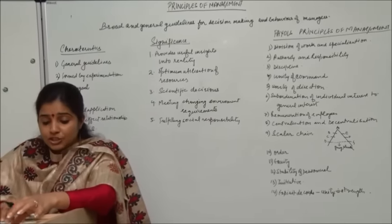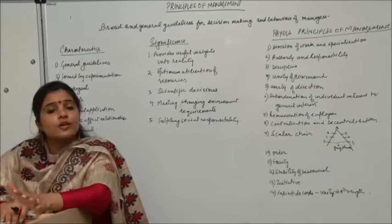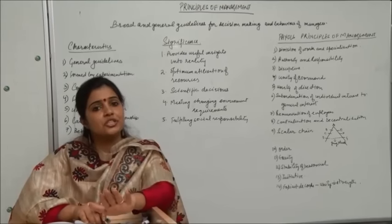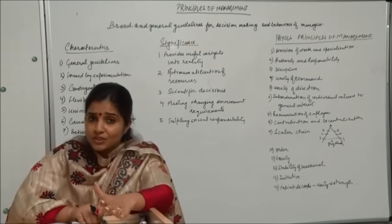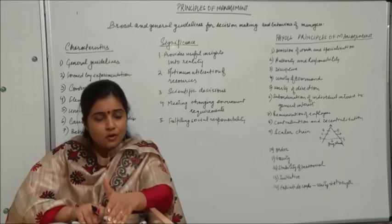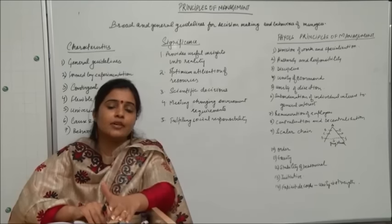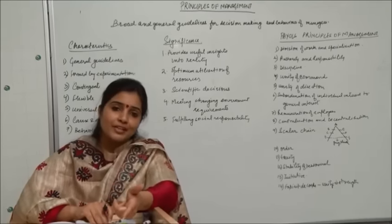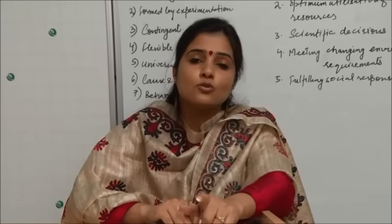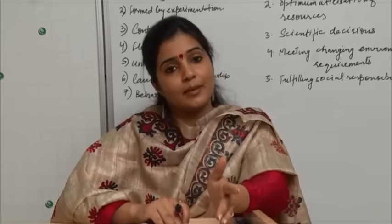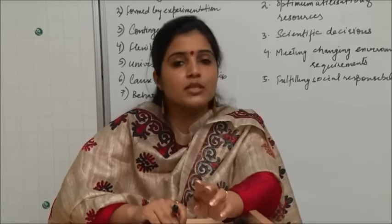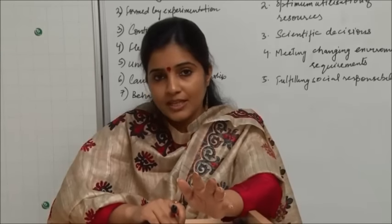For example, if the production manager is to achieve a target of manufacturing about 10,000 units in a month, it is his responsibility to achieve this target. But if he is not given the authority to file a requisition for tools and material, he will not be able to achieve his target on time — every time he will have to approach his top manager. So if you are giving him this responsibility, you must give him the required authority so that he can make a requisition for raw material and tools at the desired time. Responsibility without authority has no meaning. Similarly, authority without responsibility may be misused.